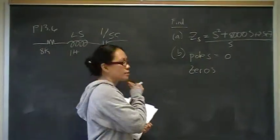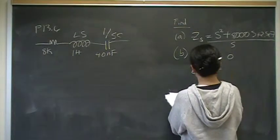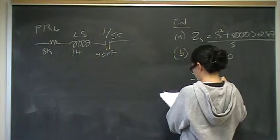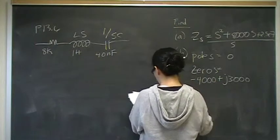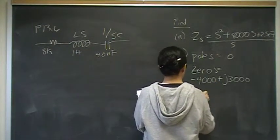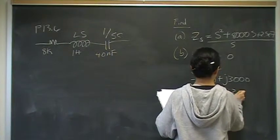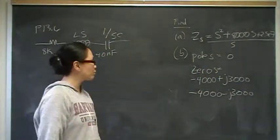Pole 1 is negative 4,000 plus j 3,000, and then plus negative 4,000 minus j 3,000. And the units are radians per second. So, there you have it, problem six.